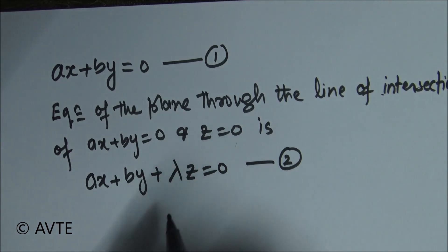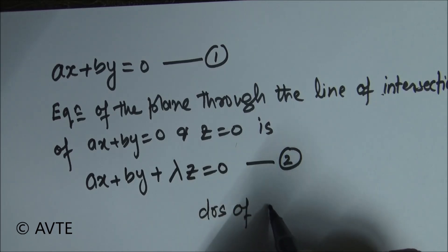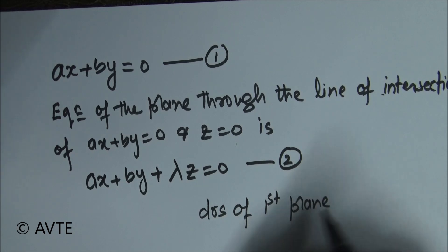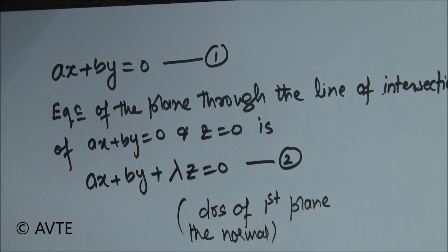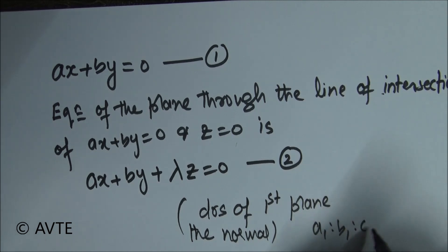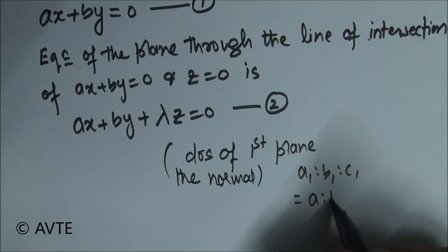So what are the direction ratios of first plane? The direction ratios of the normal to the first plane, say a1 is to b1 is to c1, and that is a is to b is to zero.